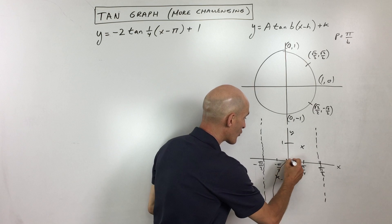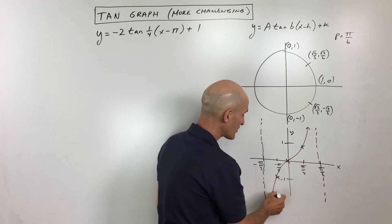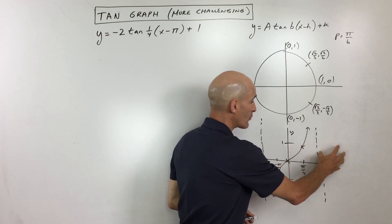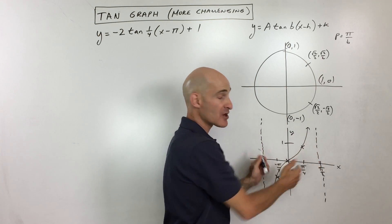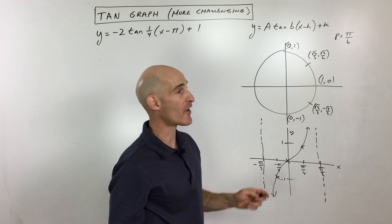So if we sketch our basic parent graph for tangent, that's what it looks like. And then what happens is it repeats, like that, going both directions. So this is just one period, one cycle. So you're with me so far?